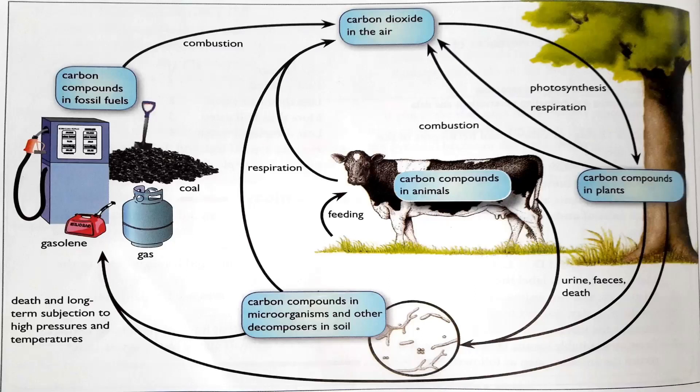Animals contain carbon as carbon compounds, and then cow urine and faeces become input for decomposers. The decomposer eats dead materials, respires, and releases carbon dioxide back into the air. Fossilization and then combustion — burning fossil fuels — releases carbon dioxide into the air. Burning fossil fuel means carbon dioxide is released, and deforestation increases carbon dioxide because trees are carbon sinks that store carbon.